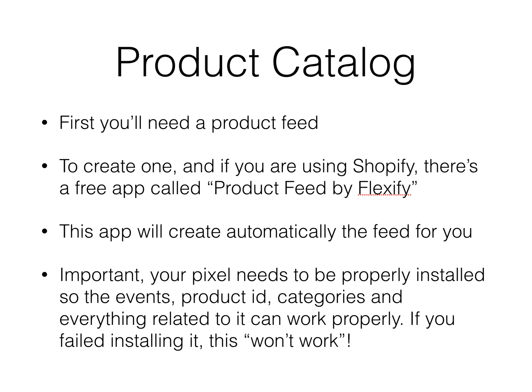Now, what is a product catalog? It's where you send your product feed. To create one, the simplest and cheapest way — especially if you're on Shopify — is to use a free app called Product Feed by Flexify. There are other options like DataFeedWatch that cost money, but Flexify is very good and free. This app will automatically create the feed you need. The important thing is your pixel must be properly installed with all events, product IDs, categories, and everything related, so it all works properly together.